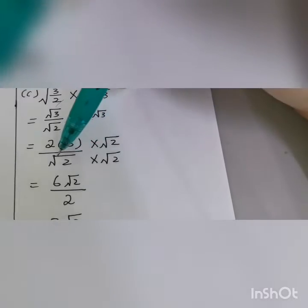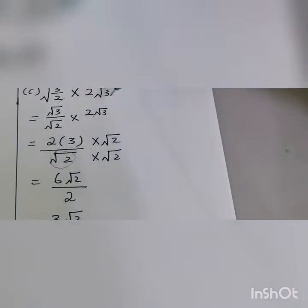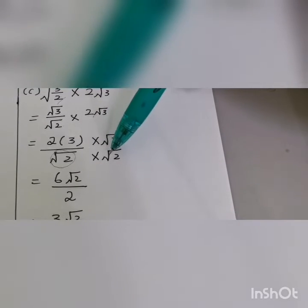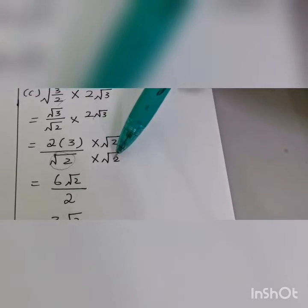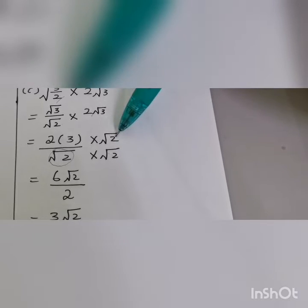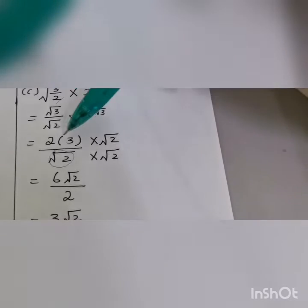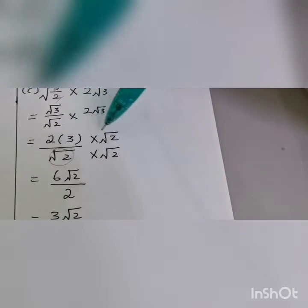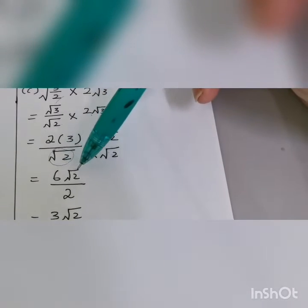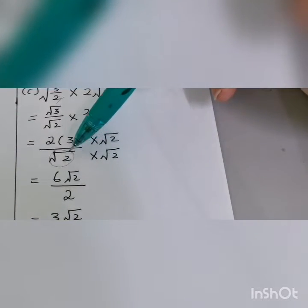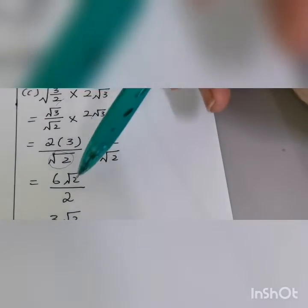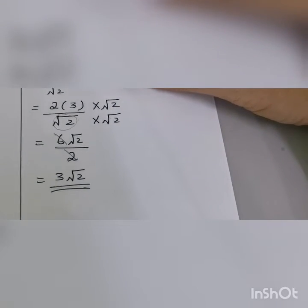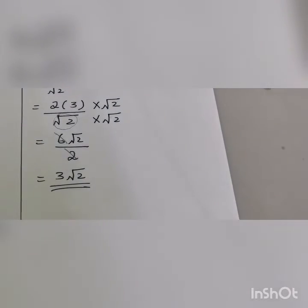We need to rationalize — eliminate the square root in the denominator. Multiply top and bottom by square root of 2. This gives 6 times square root of 2 on top, and square root of 2 times square root of 2 becomes 2 on the bottom. Simplify 6 over 2 to get the final answer: 3 square root of 2.